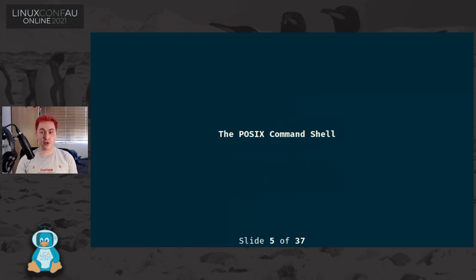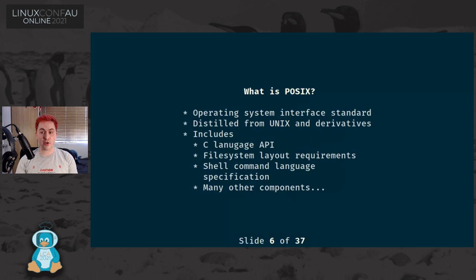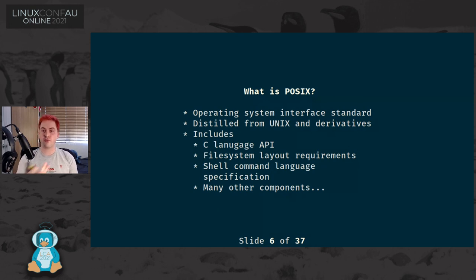First up, POSIX itself. POSIX is an operating system interface standard - a general standard on an interface that an operating system provides that any software running on that operating system should expect to exist and behave in a certain way. It's distilled from a number of Unix derivatives at the point in the late 80s that they had all reached.